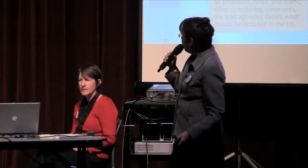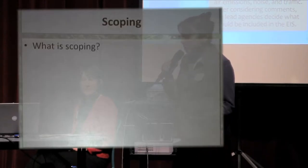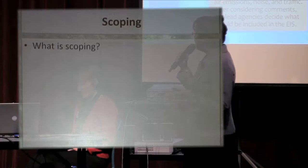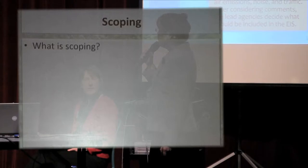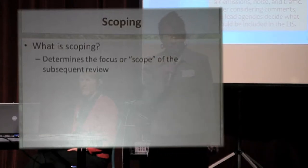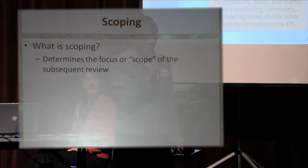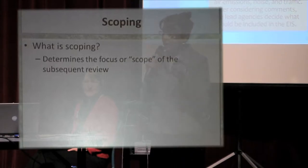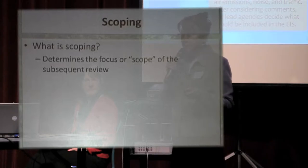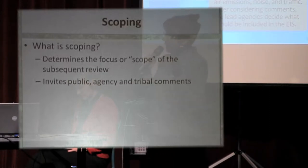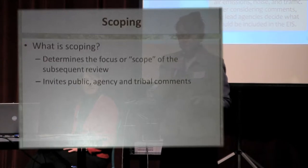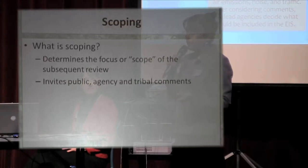To expand on this: scoping determines the focus or scope of the subsequent review — what needs to be included in the environmental impact statement. It invites the public, the agencies, and the tribes to comment. The agencies do not just decide on their own what should be in the environmental impact statement. We take very seriously — and we must — the input provided by all of you.